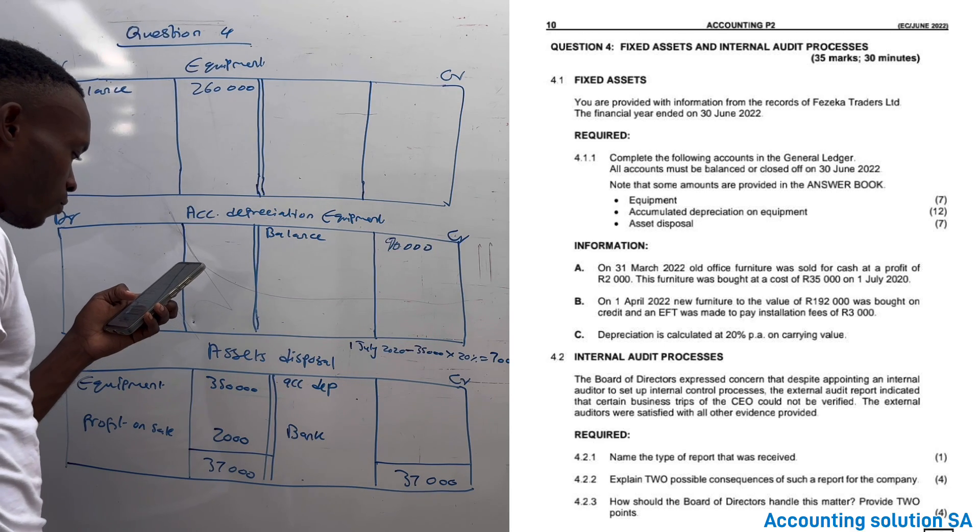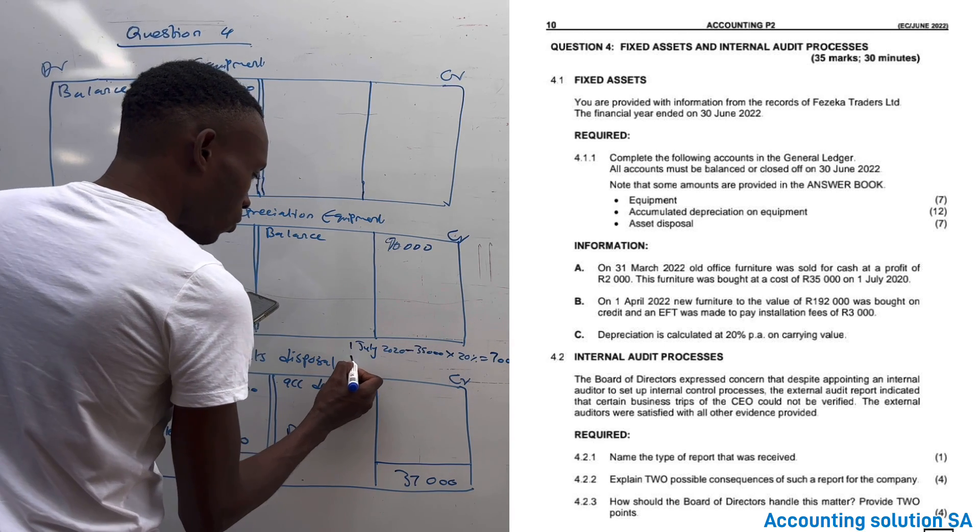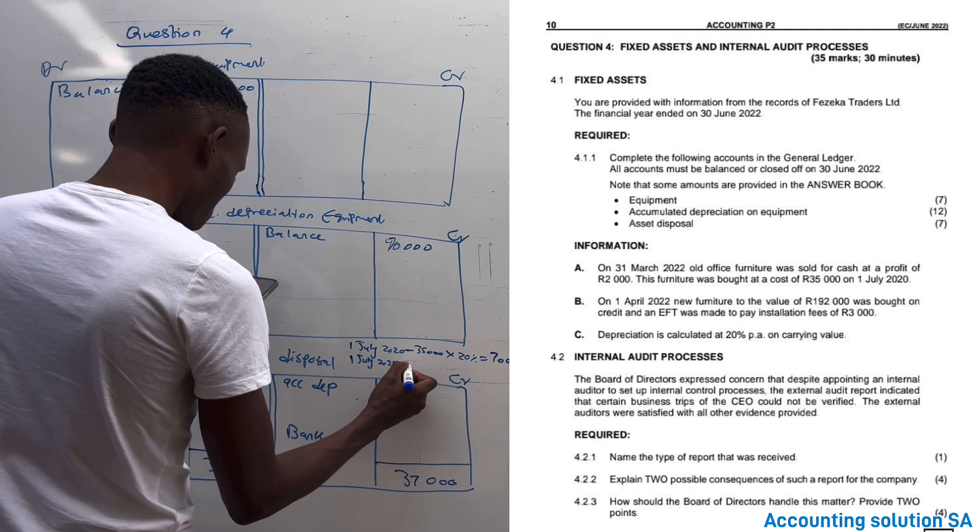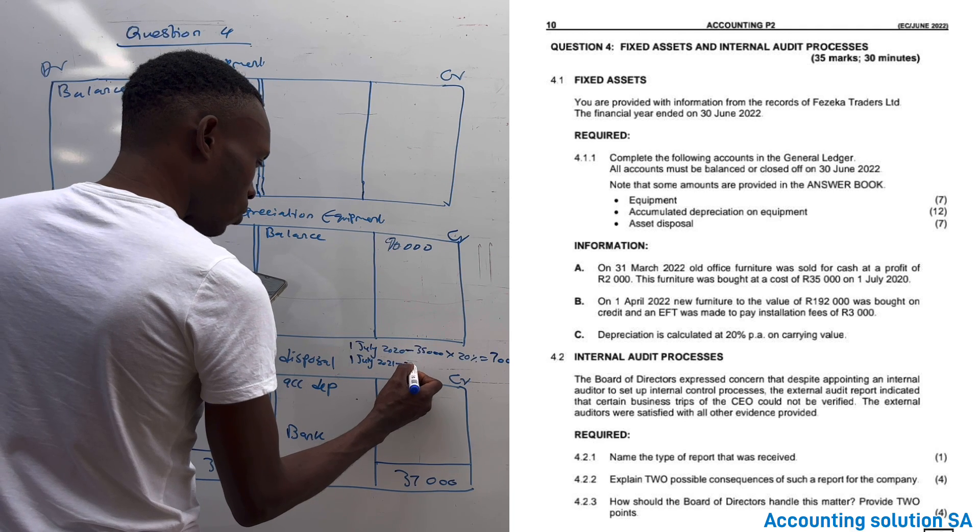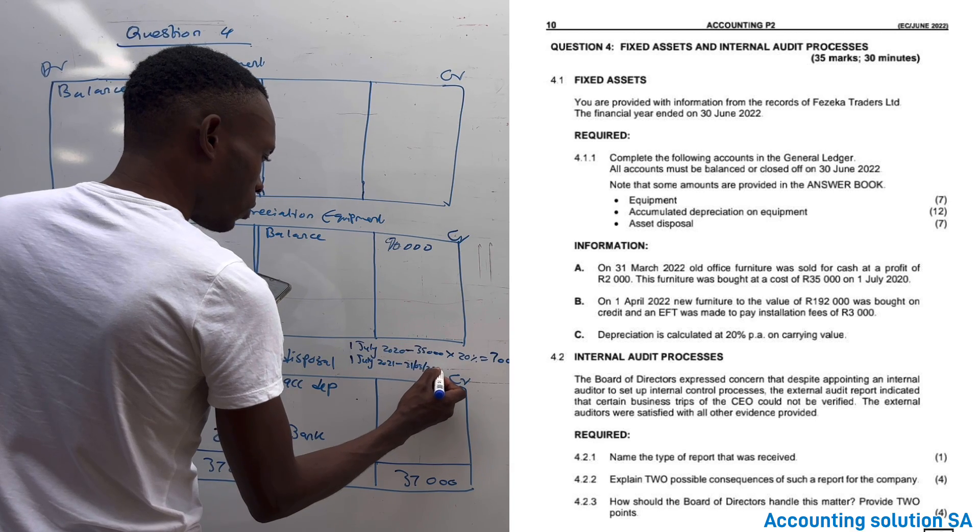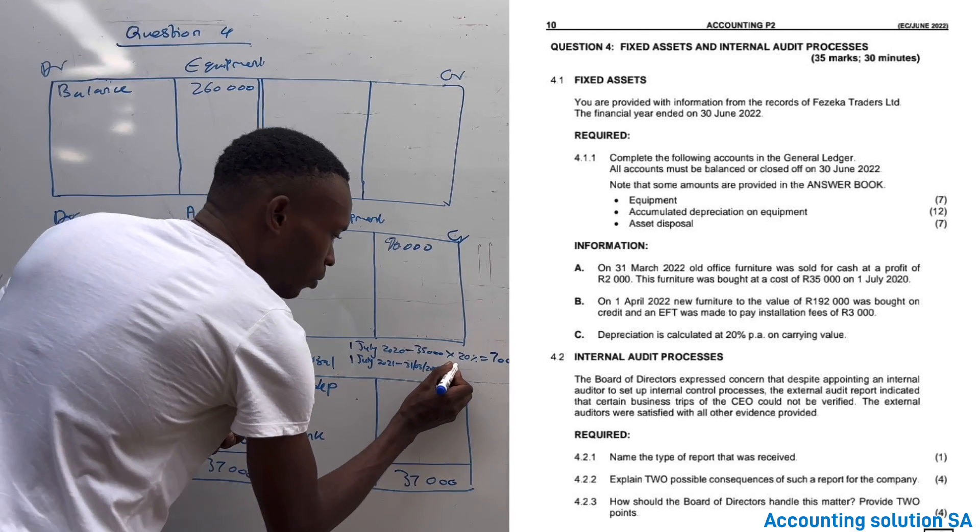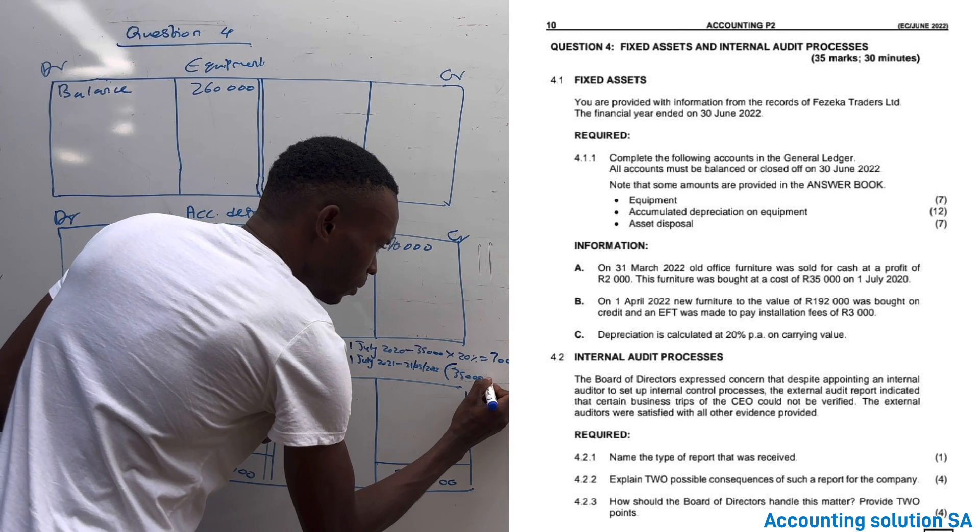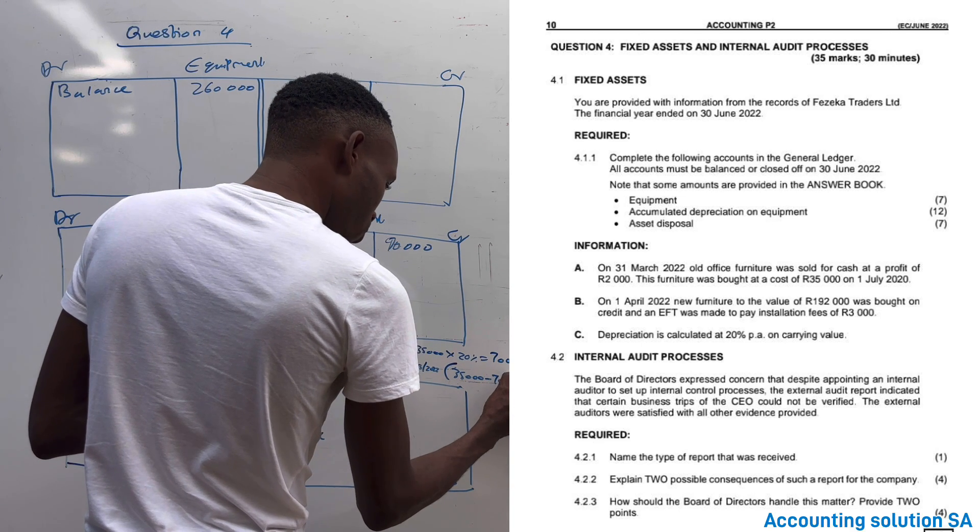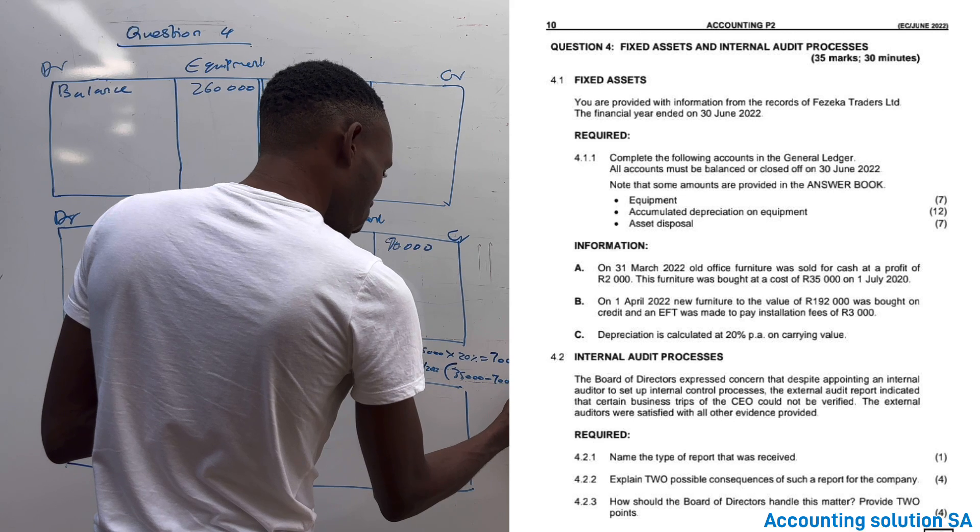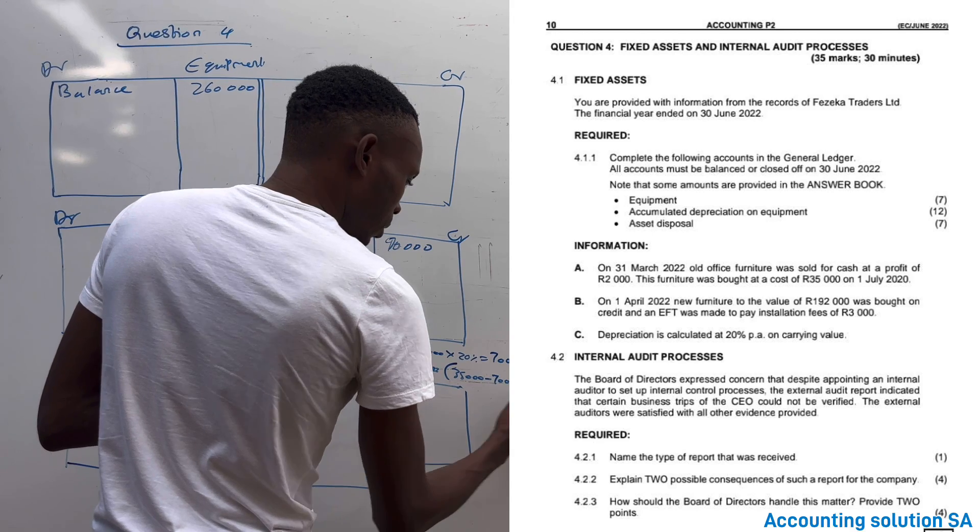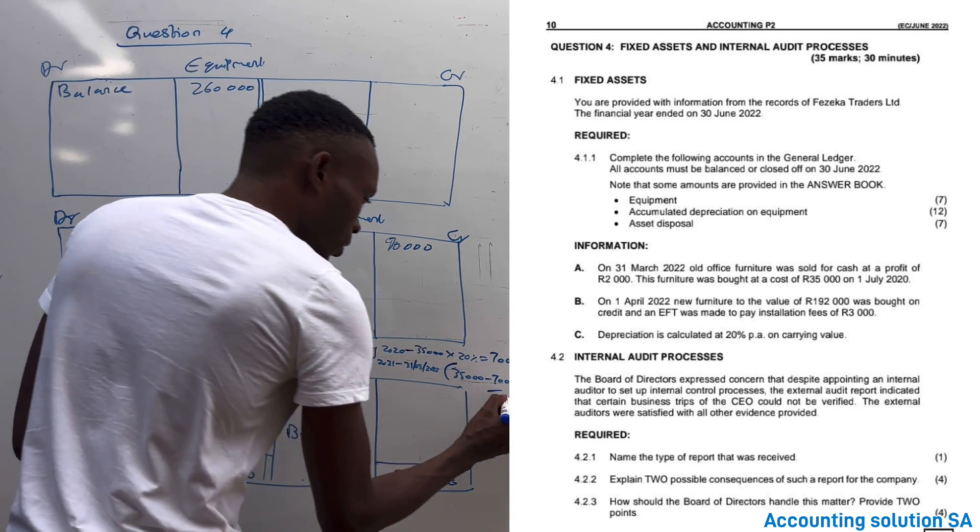It's 35,000 multiply by 20%, which is going to give us 7,000. But from the following year on 1 July 2021 until it's sold on 31 March 2022, which is two years, this is how we're going to calculate it. We're going to say 35,000 minus 7,000 now. Then after that, we get carrying amount and we multiply by - if you count, it's going to give you 9 over 12 months, multiply by 20%.